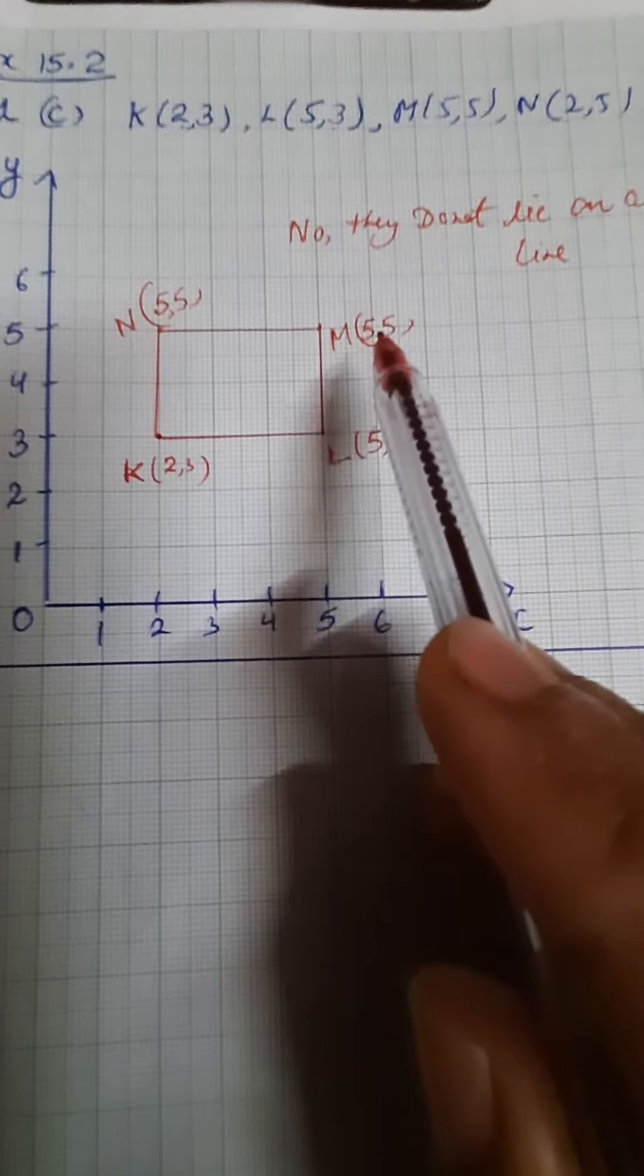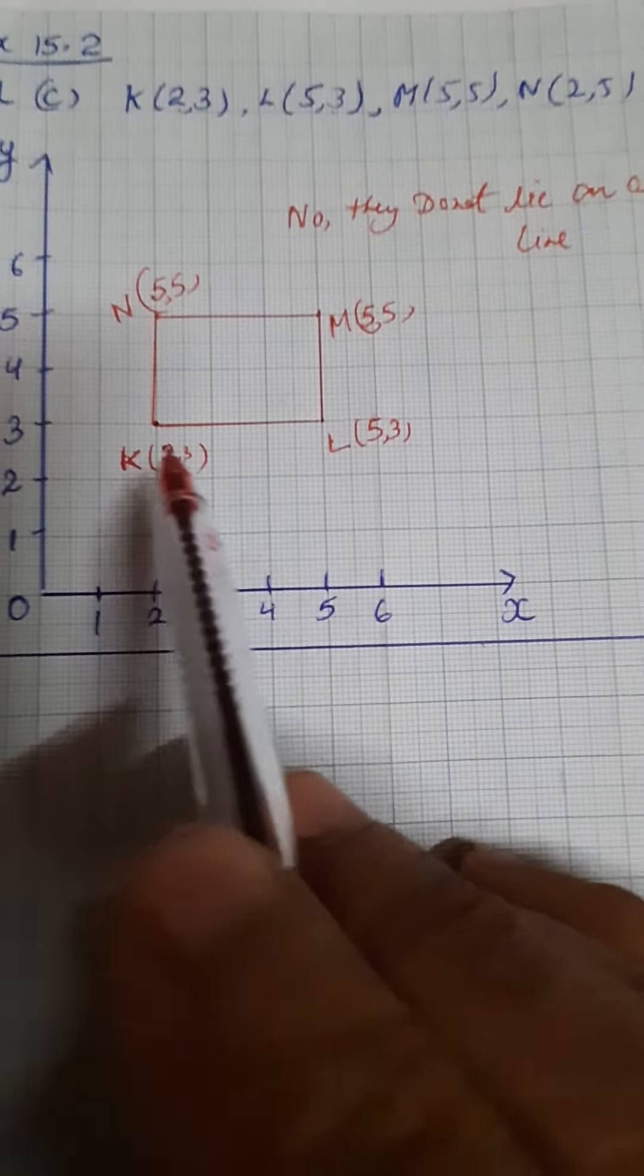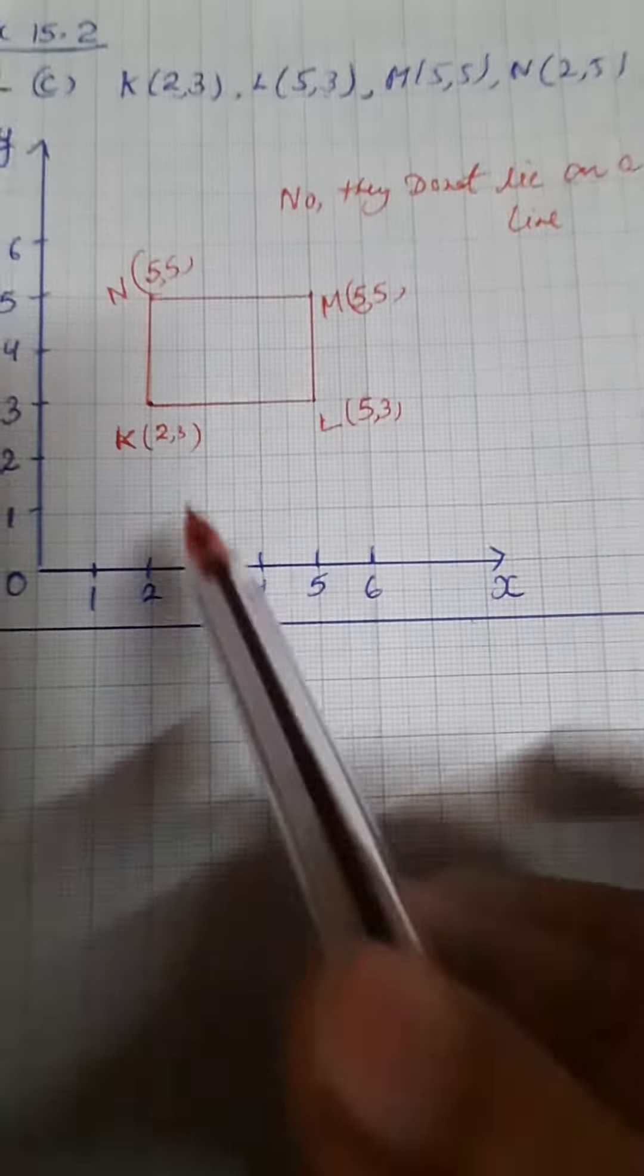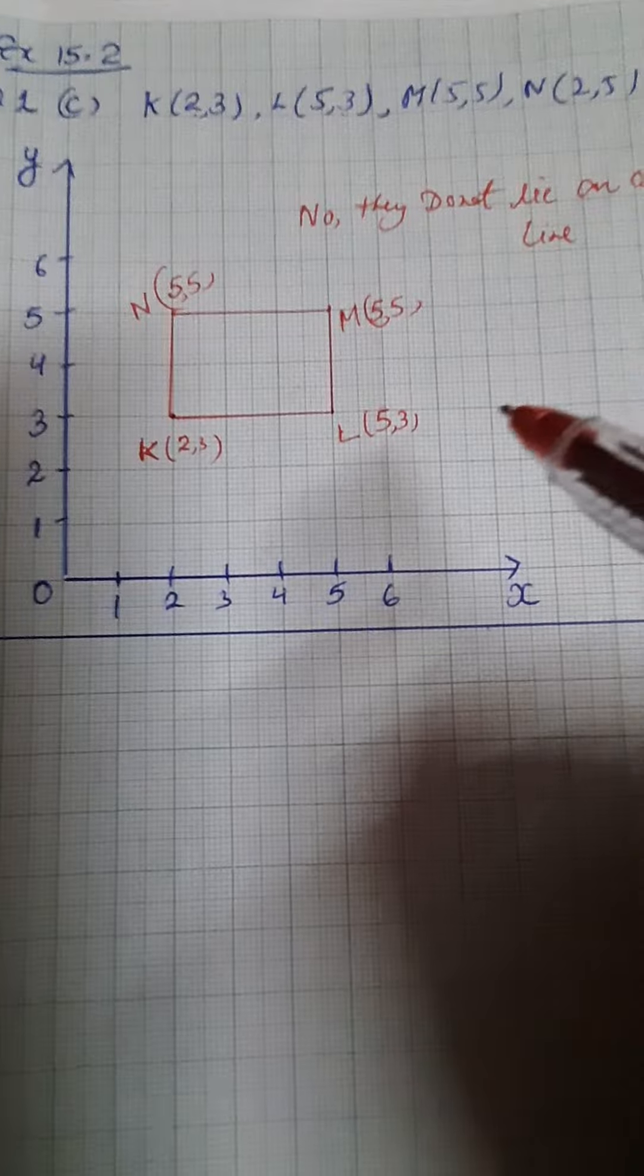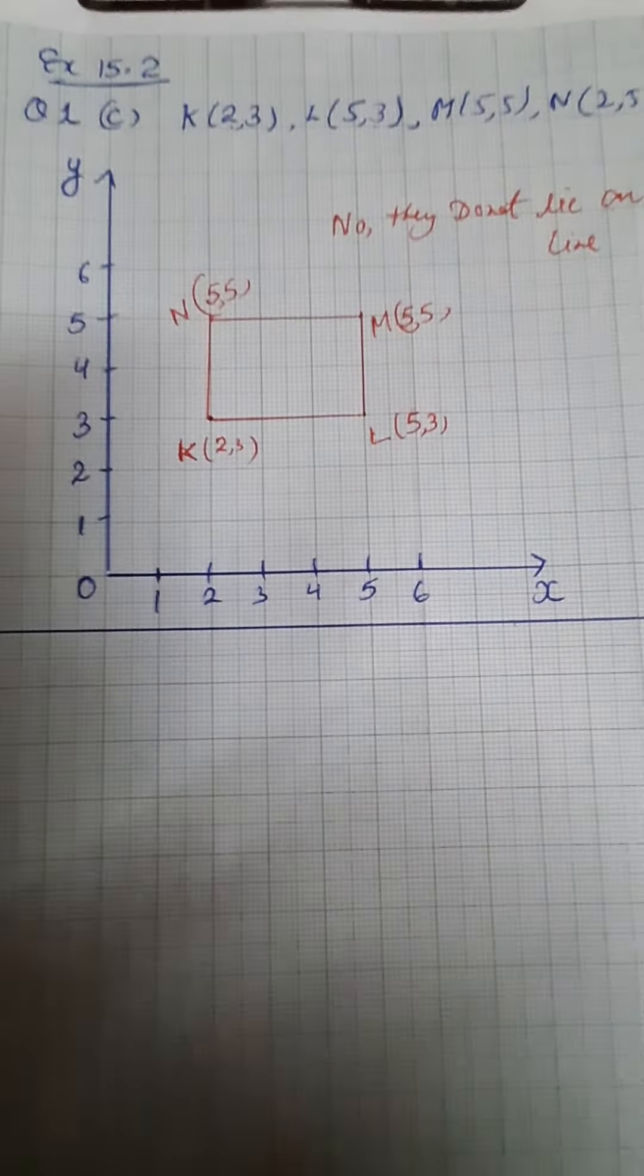The coordinates are (2,3), (5,3), (5,5), and (2,5). Now see whether they lie on the same straight line. No, they do not. So our answer will be: no, they do not lie on the same straight line. This is our joining and plotting of these points on the graph.